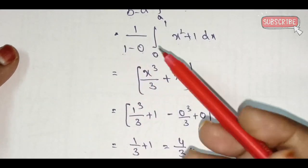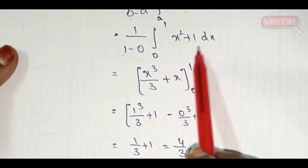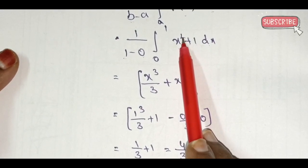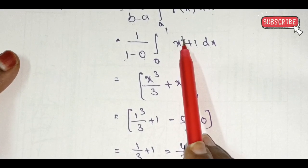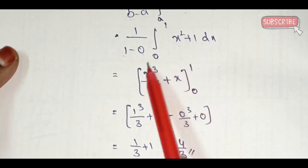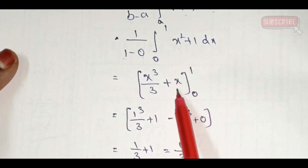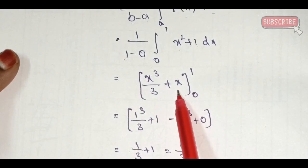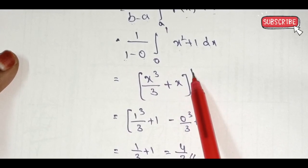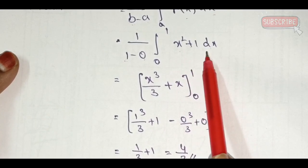Now, 1 by 1 equals 1. Apply integration: integral of (x² + 1) dx equals x³/3 + x. Apply the limits from 0 to 1.